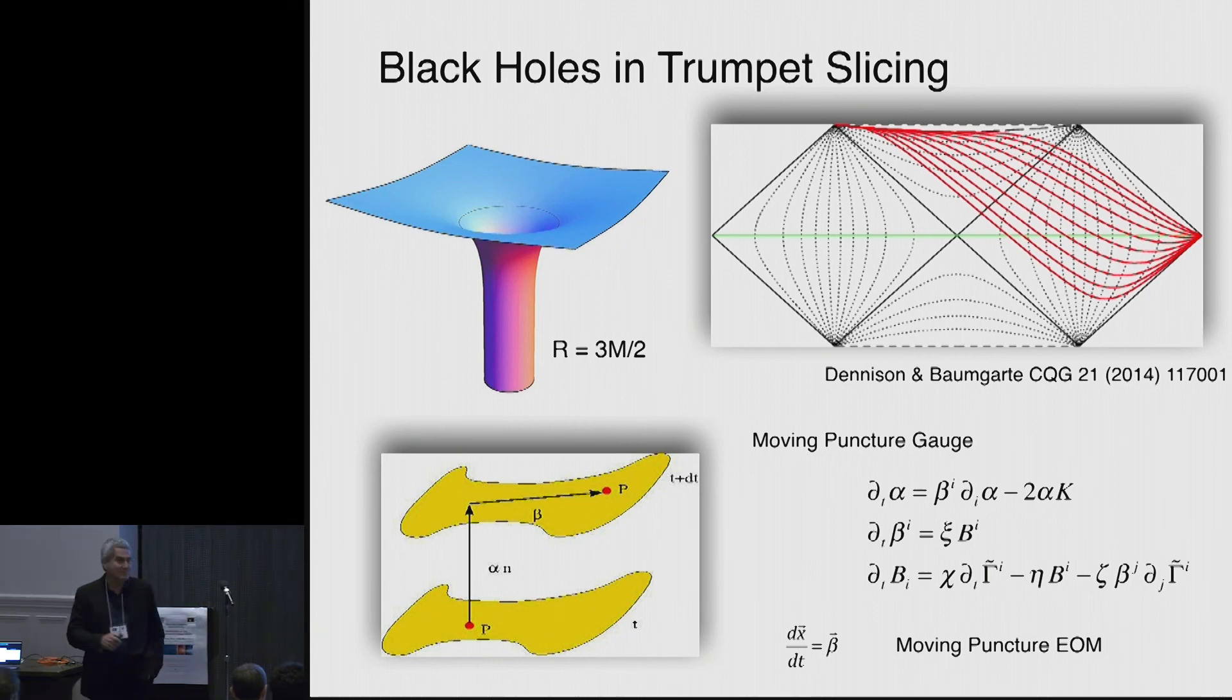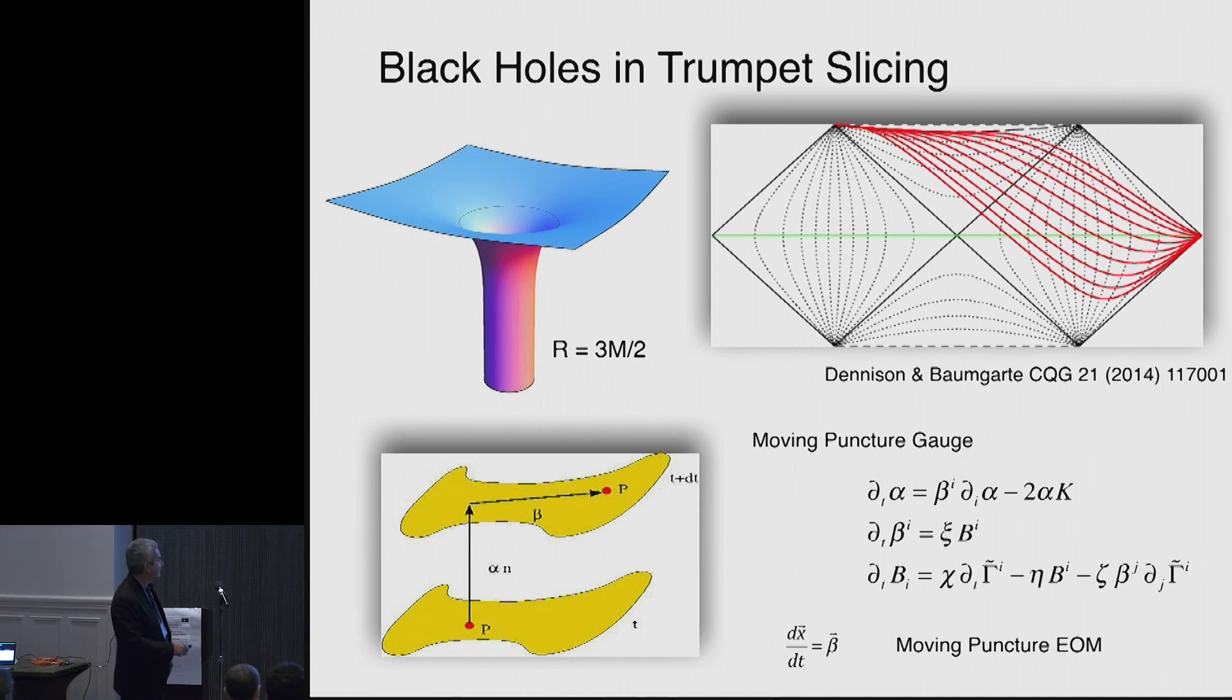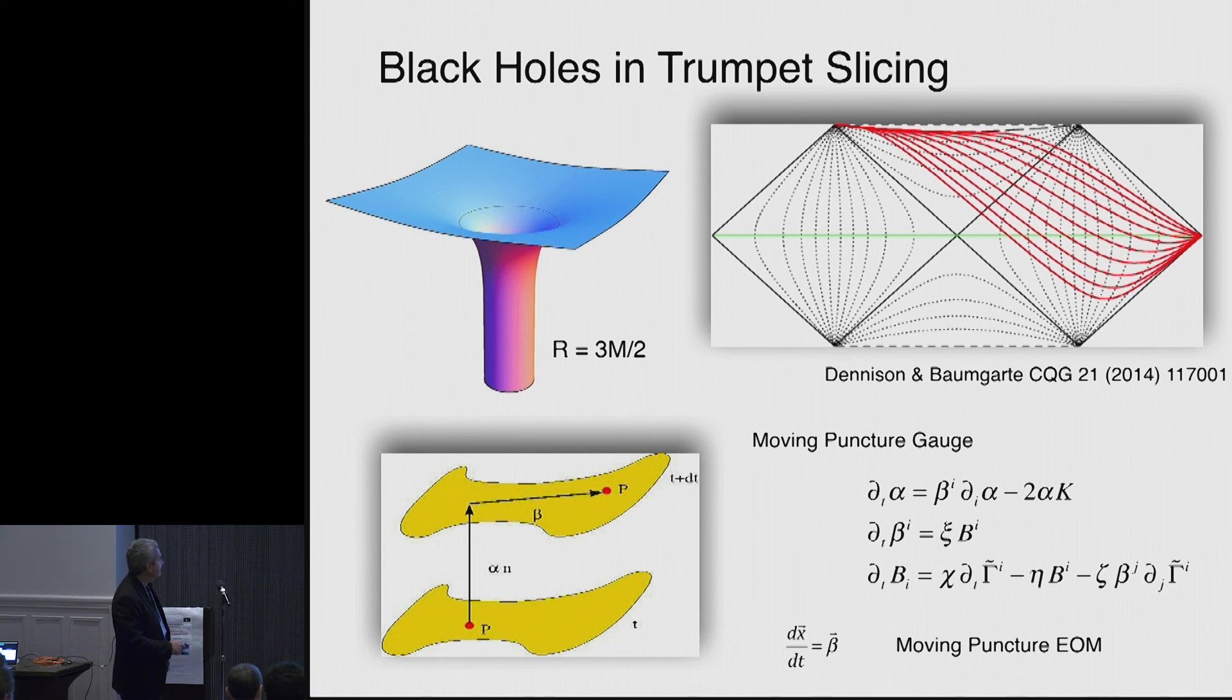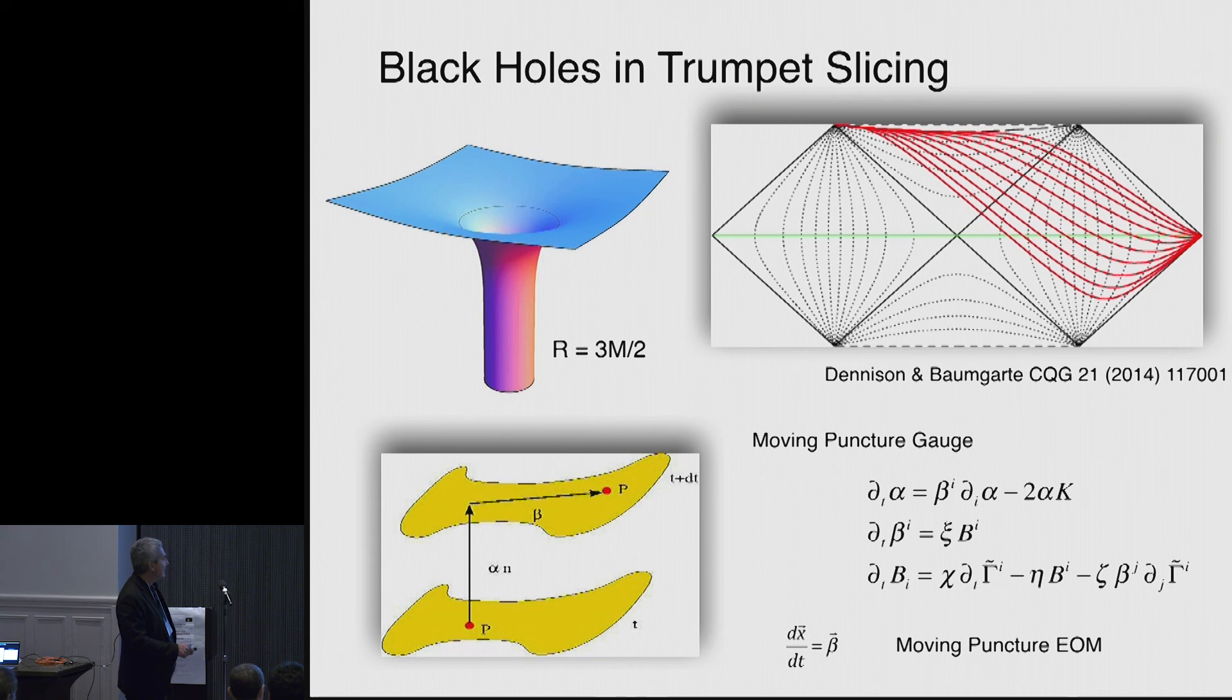So those two terms, and those who do hydro, they look a little like advection type terms. And indeed, it's an advection of coordinates. It's how beta tells you how to advect the lapse, so to speak, or how to advect this quantity.